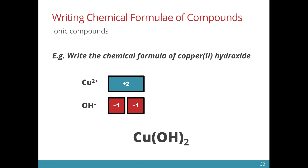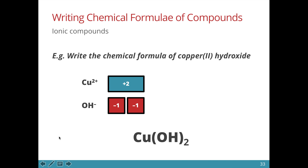This is the formula of copper 2 hydroxide. Notice that the hydroxide ion is made up of two different atoms. We need to put a bracket when there is more than one of such a polyatomic ion.